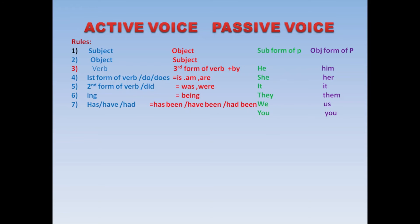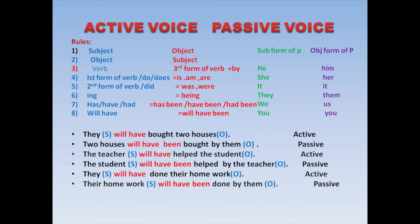Rule number eight: if 'will have' is in the sentence, change it to 'will have been'. That's all. The other rules remain the same — subject becomes object, object becomes subject, third form of verb, and 'by' is added. Let's look at some examples to make the concept clearer.